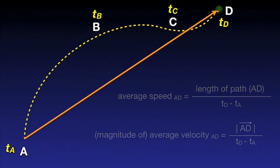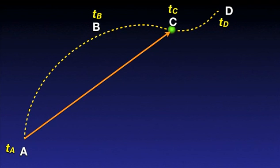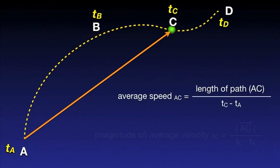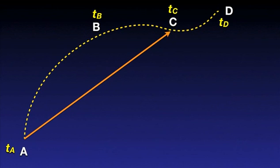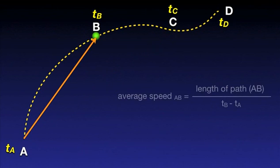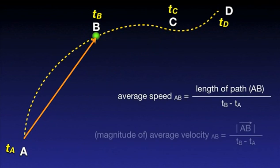Now let's concentrate on a shorter section, AC. The two quantities can be calculated as shown on the screen. Similarly, the two quantities can be calculated for an even shorter section of the motion, AB.